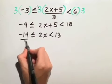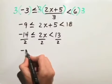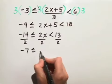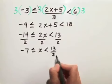We divide all 3 parts by 2, and our solution is negative 7 is less than or equal to x, which is less than 13 halves.